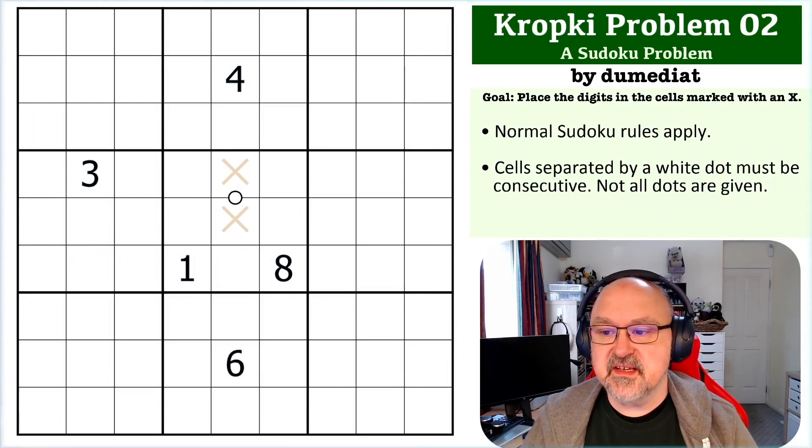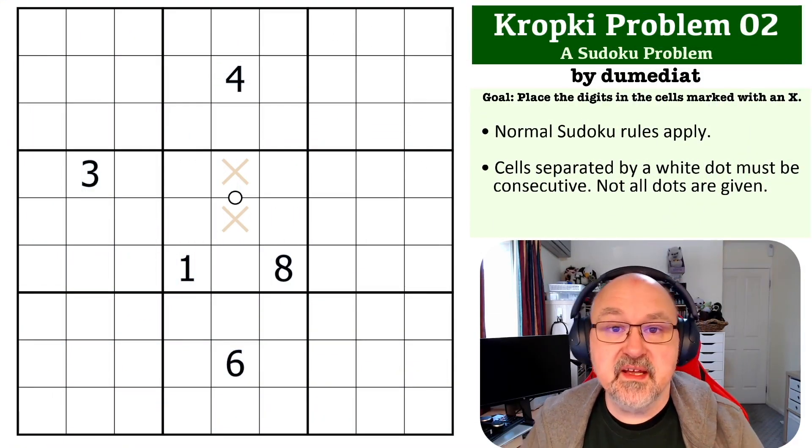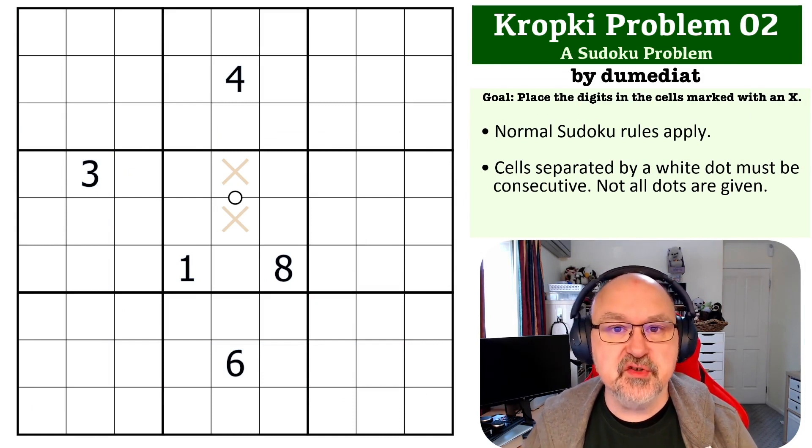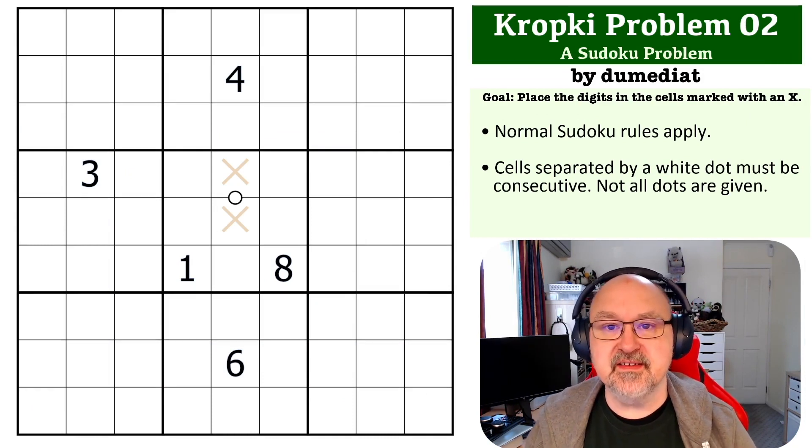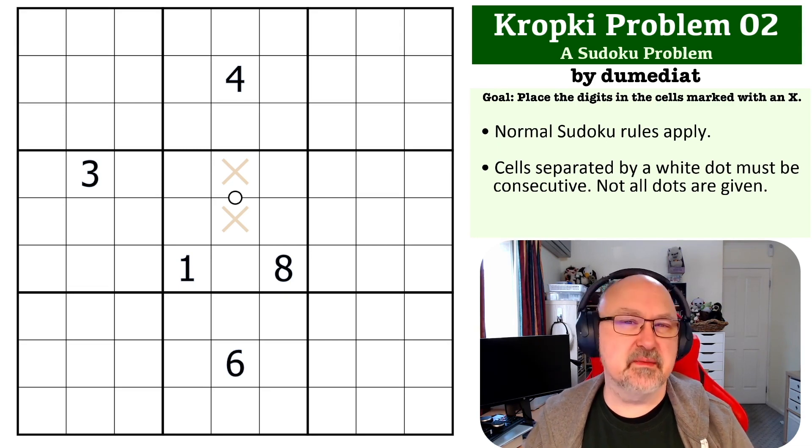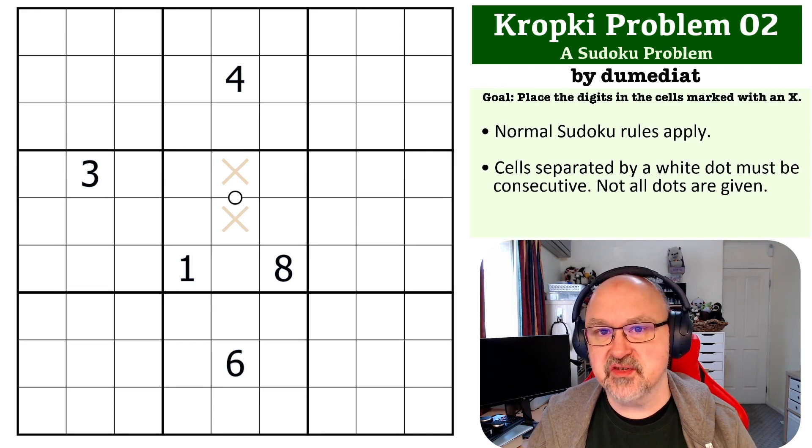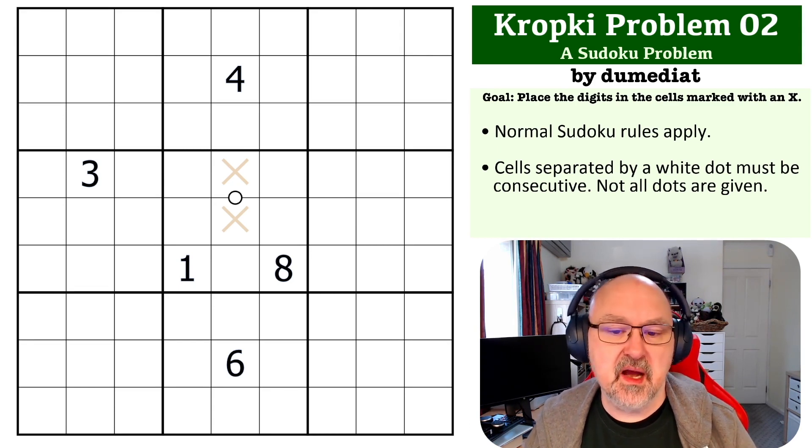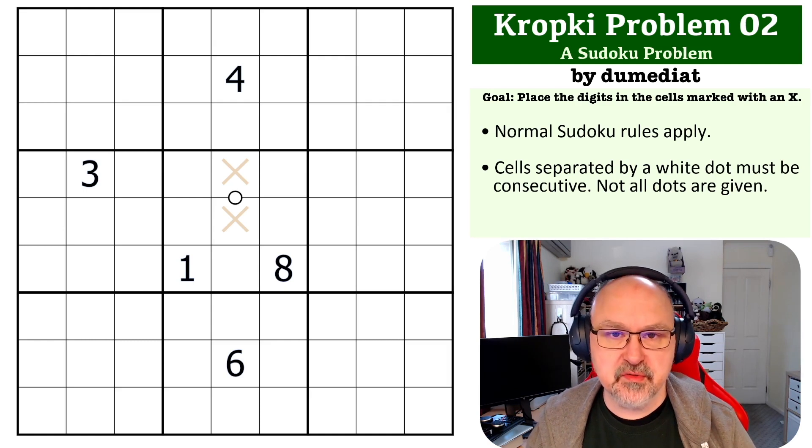Hey this is Bremster and this is the next problem in the Sudoku problem series. This is one that was submitted to me by Doomed Yacht and basically this is one of the cooler and sometimes less obvious difference dot constraints or Kropki constraints.